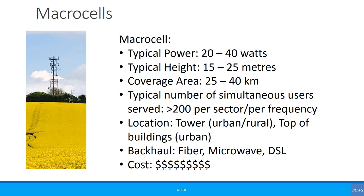Typical height is between 15 to 30 meters. Coverage area is 25 to 40 kilometers. Each macro sector typically serves greater than 200 simultaneous users per sector per frequency. The location is generally a tower in urban and rural areas, or the top of buildings in urban areas. Backhaul can be fiber, microwave, DSL, or even satellite. Macro cells are really, really expensive.